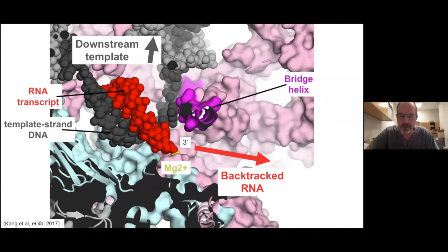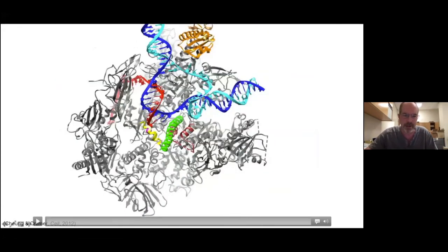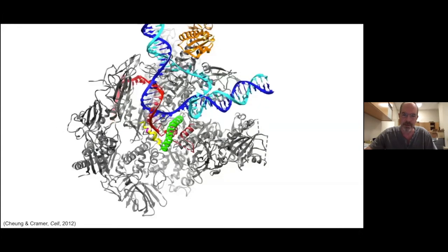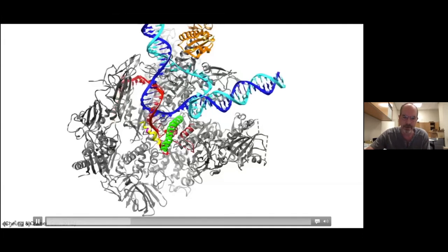There are now structures of backtrack complexes of both eukaryotic and bacterial polymerases. This movie from Patrick Kramer's group shows Pol II — highly conserved in structure with the E. coli enzyme. The bridge helix is green; you see the template DNA going over the top and the downstream duplex DNA, the RNA-DNA hybrid, and the active site magnesium in magenta. This shows what happens when the enzyme backtracks — it moves backwards on the DNA, the RNA reverse threads, and the three-prime end of the transcript extrudes out the secondary channel.